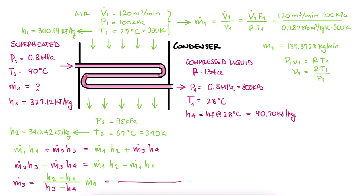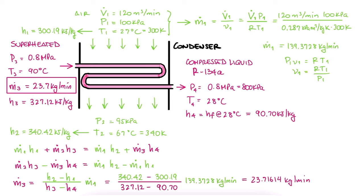We substitute all of these values in our first expression for the mass flow rate and find it to be 23.7 kg per minute. And that's it.